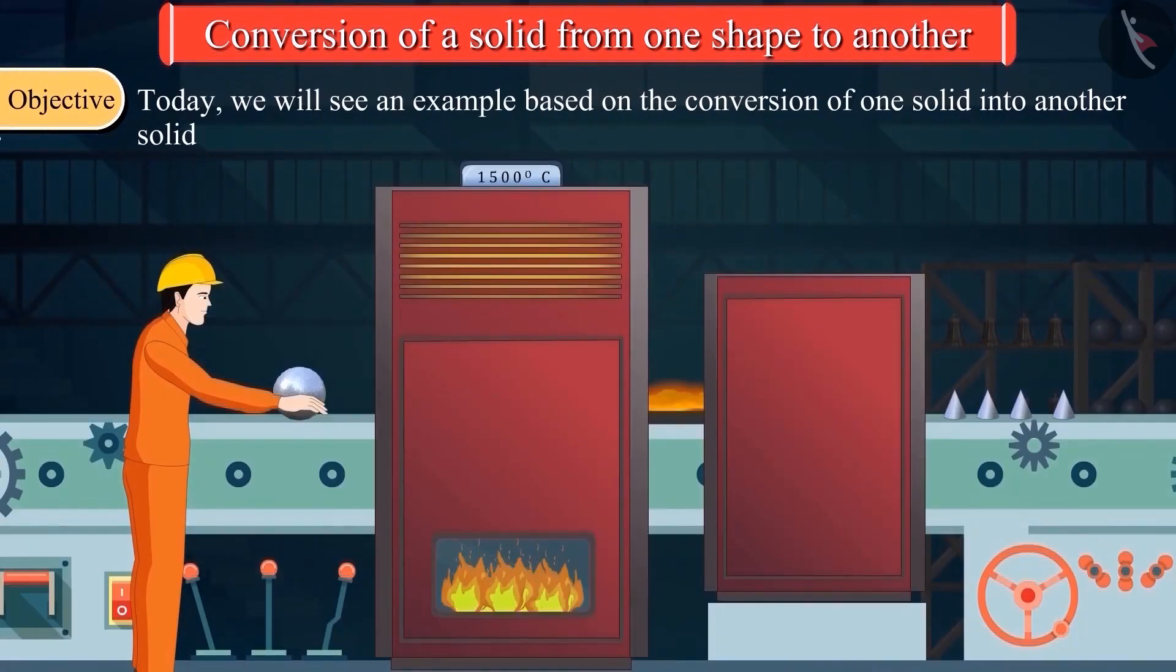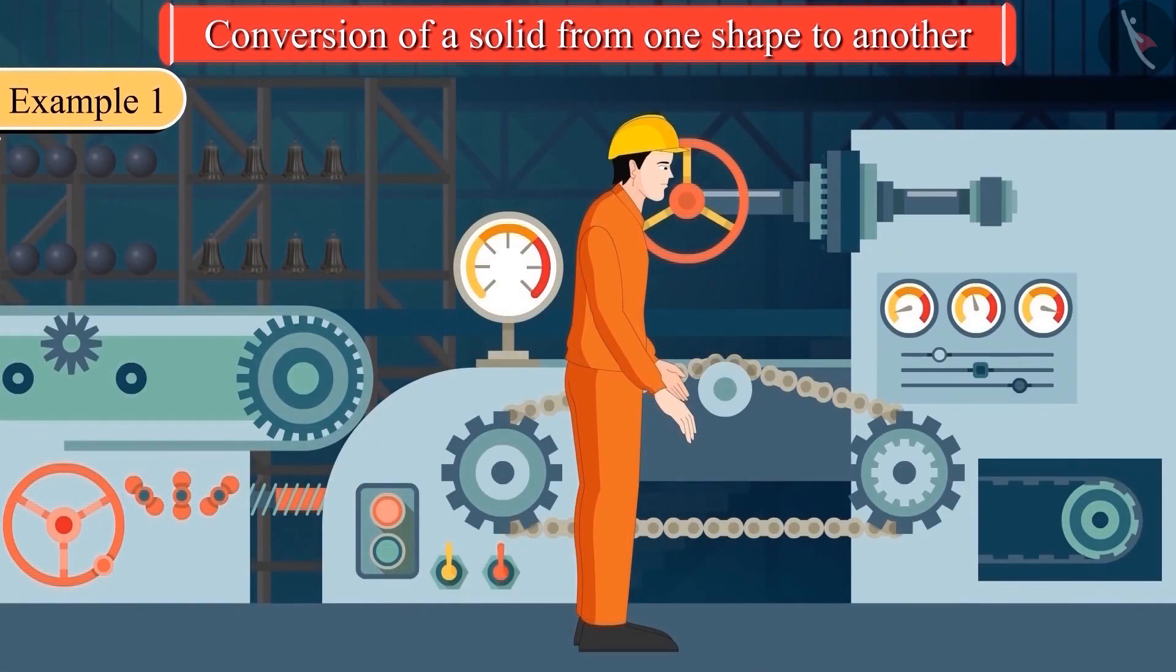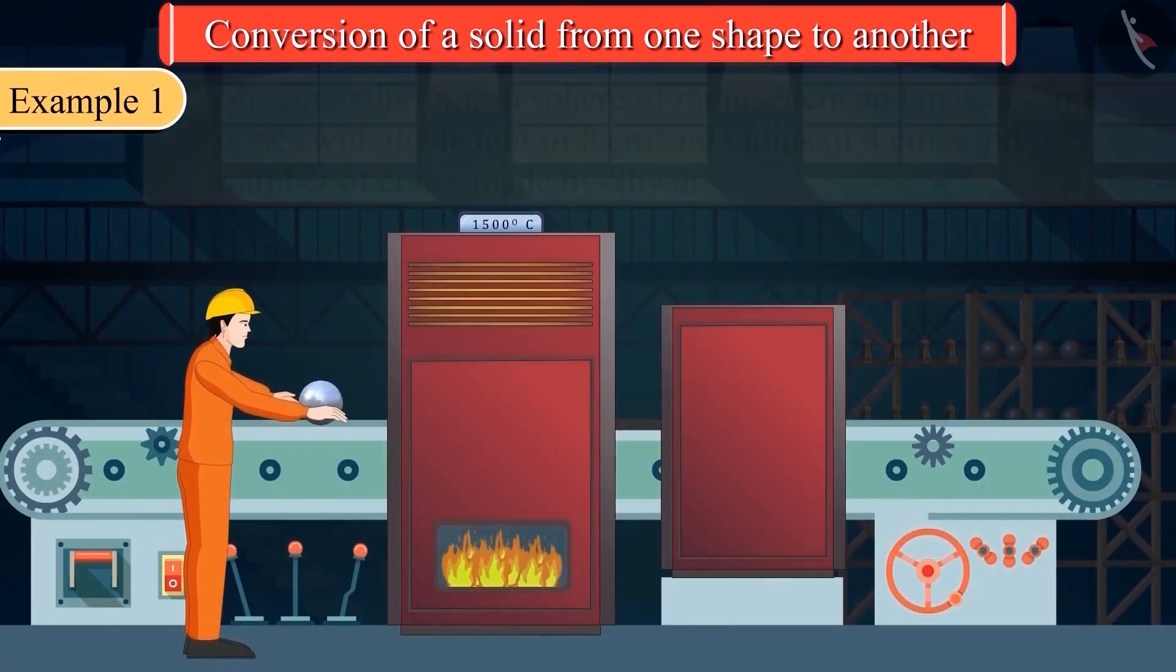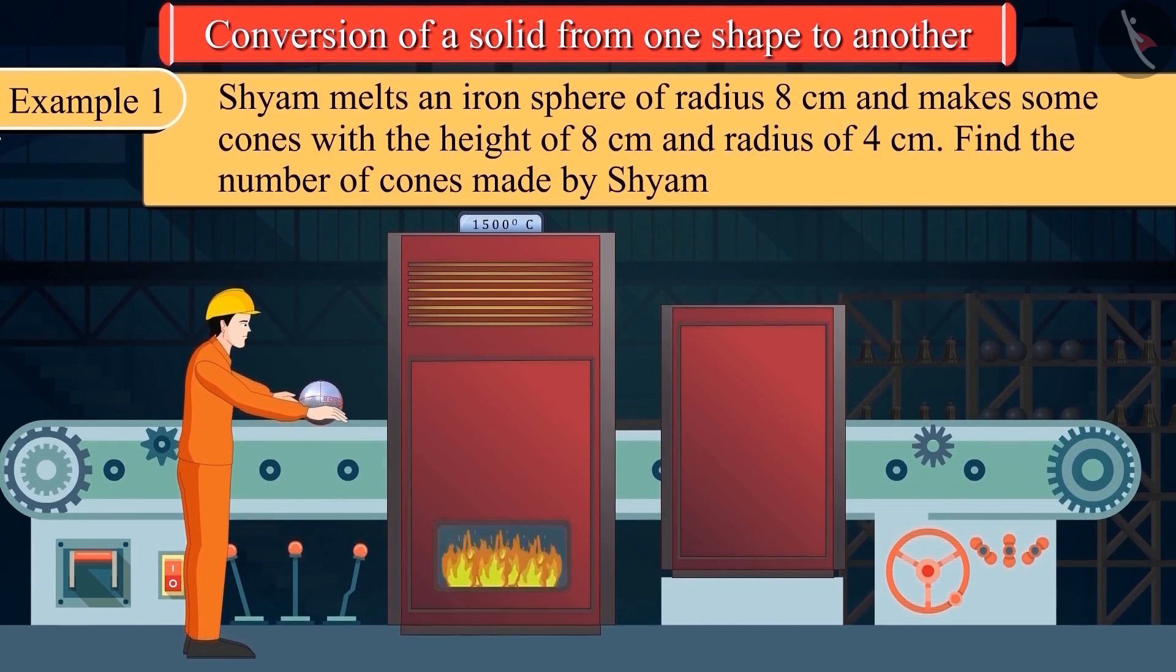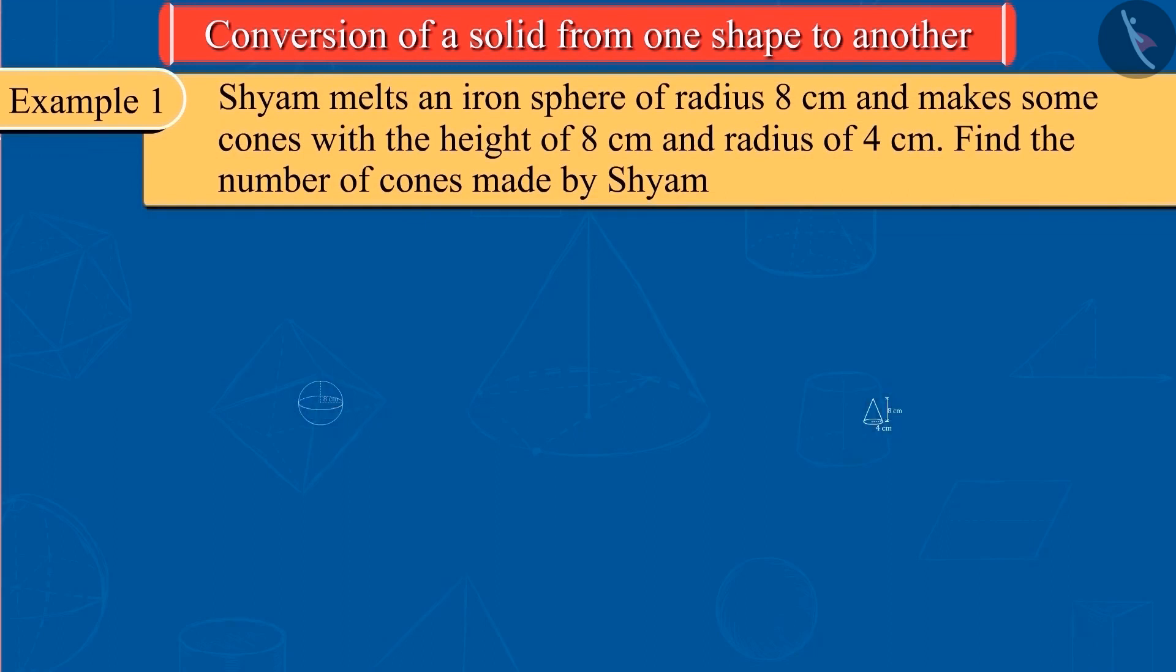Today we will see some interesting examples based on this. Shyam works in an iron factory where iron objects of different shapes are made. One day Shyam melts an iron sphere of radius 8 cm and makes some cones with height 8 cm and radius 4 cm.